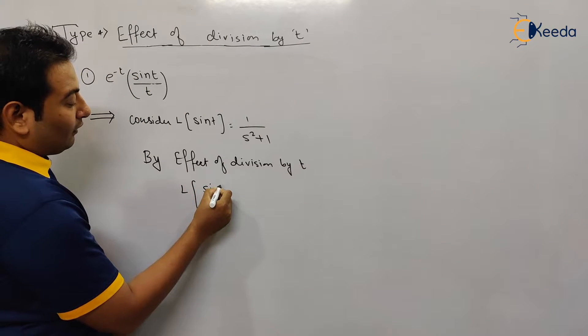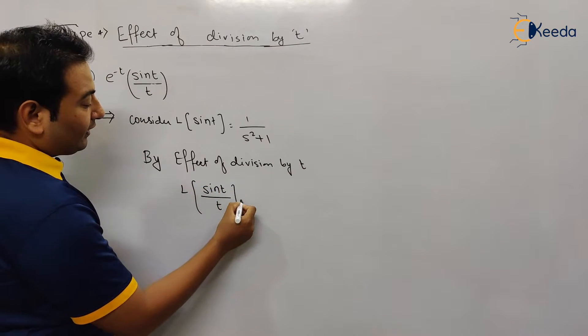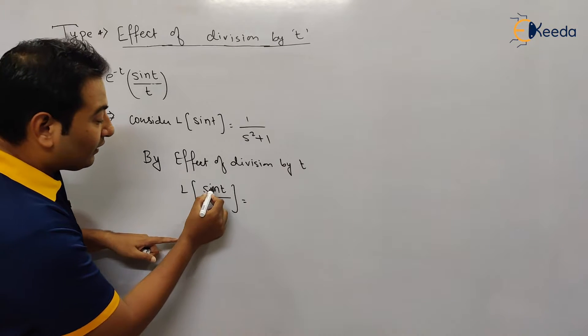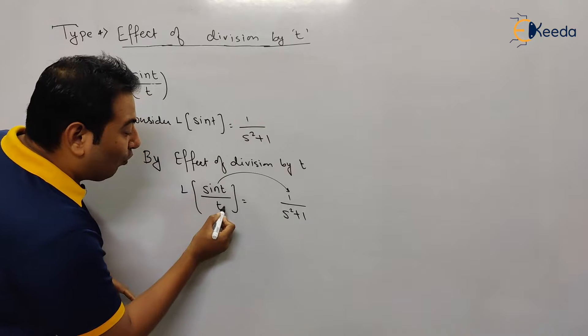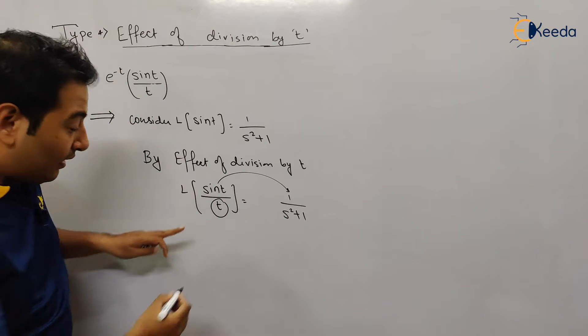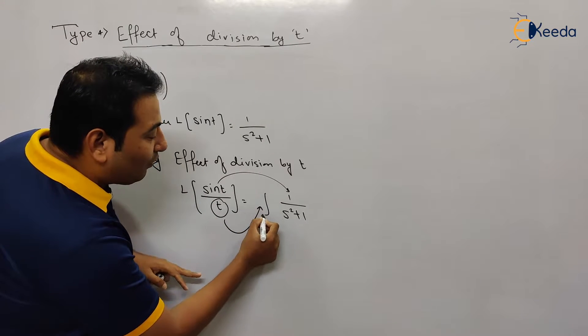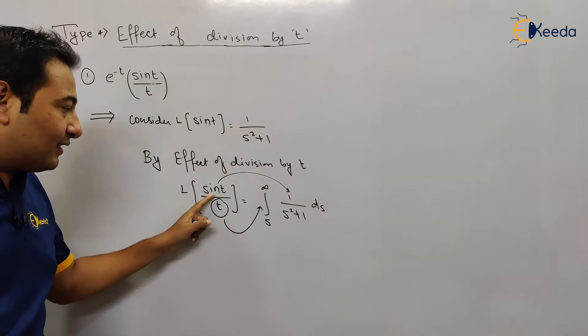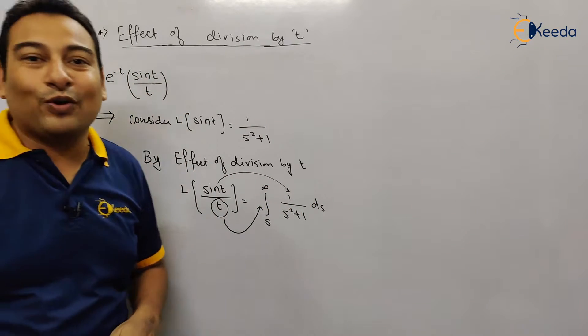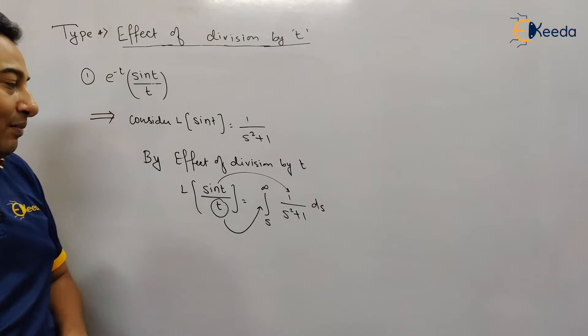Laplace of sin t upon t is equal to, yes, what is Laplace of sin t? 1 upon s square plus 1. And what is the effect of this t? Because of this t we are going to integrate from s to infinity. Sin t Laplace, that is 1 upon s square plus 1. So this is the effect of division by t.